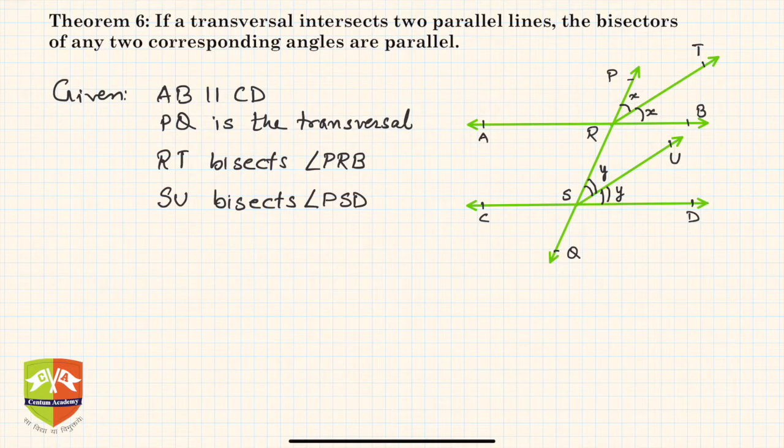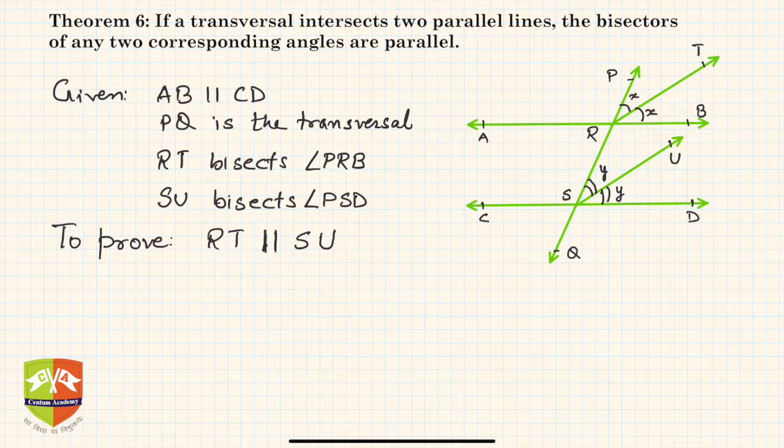And SU bisects angle PSD, or RSD, whichever way you want to say. So what do you need to prove? You need to prove that RT is parallel to SU.